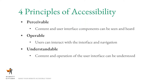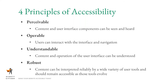The fourth principle is robust — the content needs to be interpreted by a wide variety of user tools. If someone can't use a keyboard, laptop screen, or mouse, the content must be interpretable by assistive technologies. As those tools evolve, content should remain accessible. Think of it as simple as smartphones and even Google needing to be able to read the content. If any of these four principles are not met, users with disabilities will have trouble using your website.